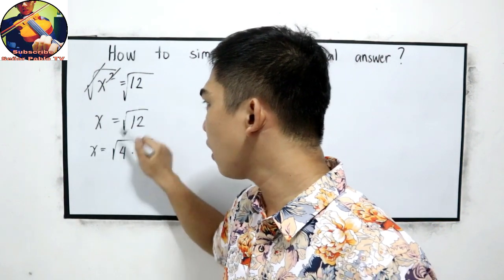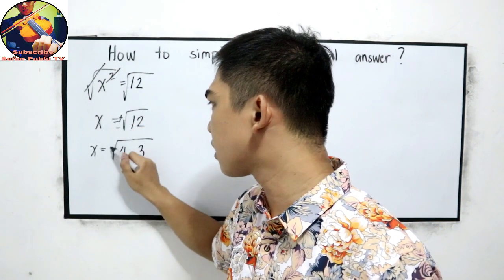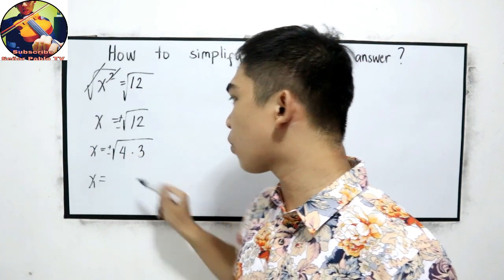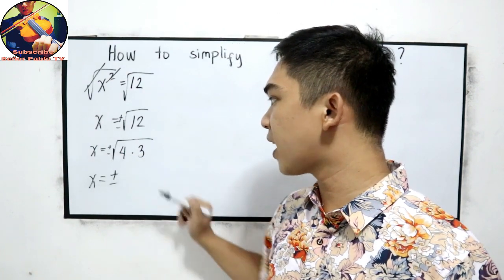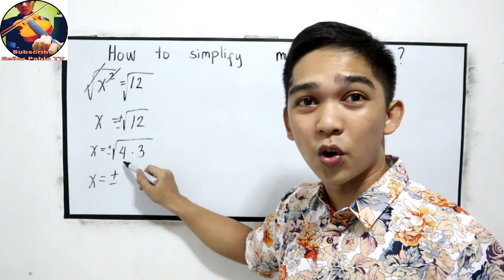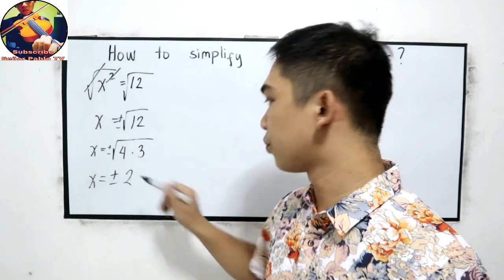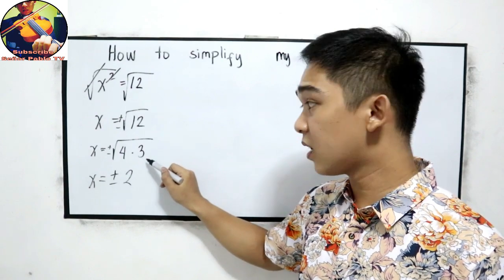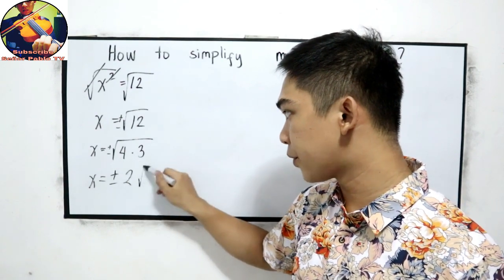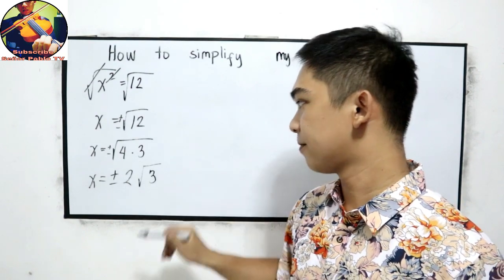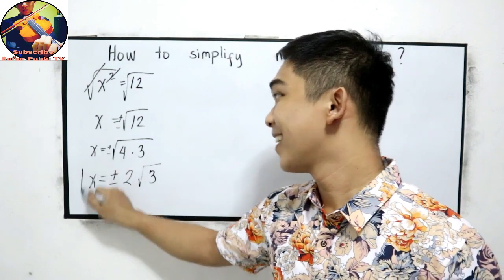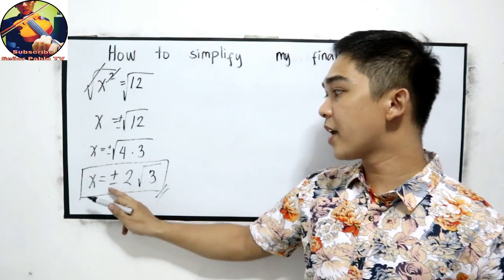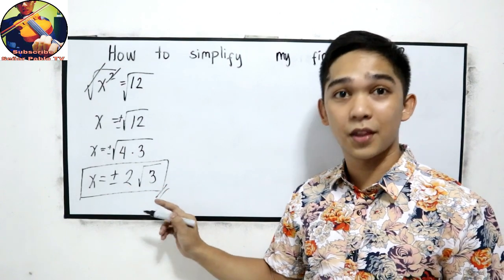Our final answer will be: plus or minus x is equal to plus or minus the square root of 4, which is 2, then copy the square root of 3. So our final answer is plus or minus 2 square root of 3.